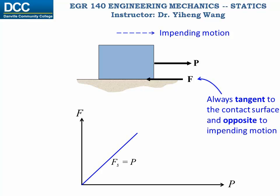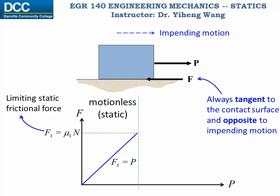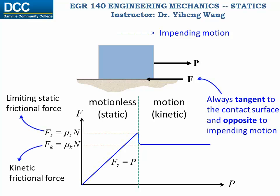This continues until the applied force P reaches the limiting value, at which point the frictional force reaches the maximum static frictional force: F equals mu_s times the normal force N. Mu_s is the coefficient of static friction, determined through experiments. Up to this point the crate is still motionless but on the edge of slipping. If you continue to increase P, the crate starts sliding. The friction is now kinetic friction: F equals mu_k times N, where mu_k is the coefficient of kinetic friction, which is normally smaller than the coefficient of static friction, also determined through experiments.